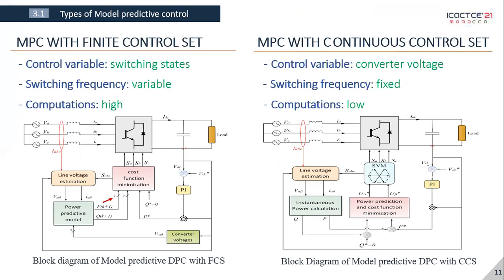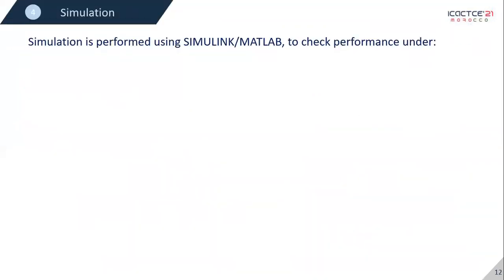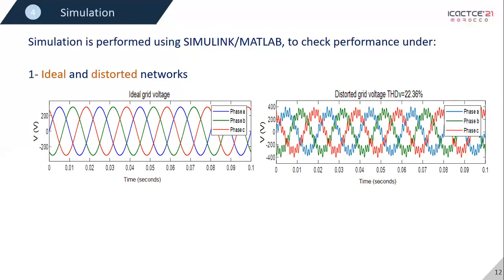Now next, we have simulated the presented control strategies in Simulink MATLAB and we have found the results under ideal and distorted networks, a step change in the reference DC voltage, and a step change in the load. The obtained waveforms were as follows.